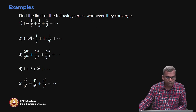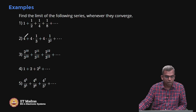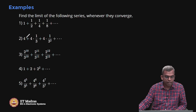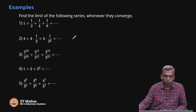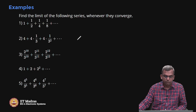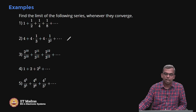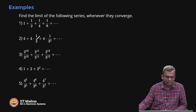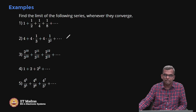The next series has a 4 out front, but the next term is always obtained by multiplying by 1/3. So you take 4 common outside and get 4 × (1 + 1/3 + 1/3² + ...) = 4 × 1/(1−1/3) = 4 × 3/2 = 6.